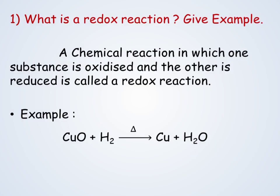What is a redox reaction? Give an example. A chemical reaction in which one substance is oxidized and the other is reduced is called a redox reaction. Example: copper oxide plus hydrogen gives copper plus water. Copper oxide is reduced to copper — that is a reduction process — whereas hydrogen is gaining oxygen, which is an oxidation process.